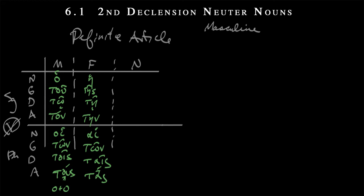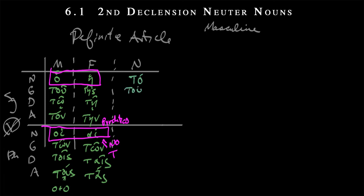We noticed that there is no accent in the nominative — these are what we call proclitics. There is also no tau; they began with vowels, and these are short diphthongs. And then finally, we had the neuter, and this one was a little bit different. We had an accent, ta. But then in the obliques, the neuter looked a lot like the masculine: to, tō, and then ta.